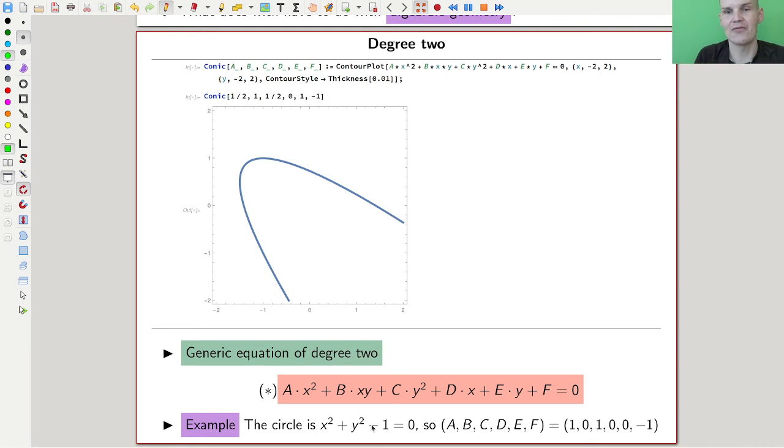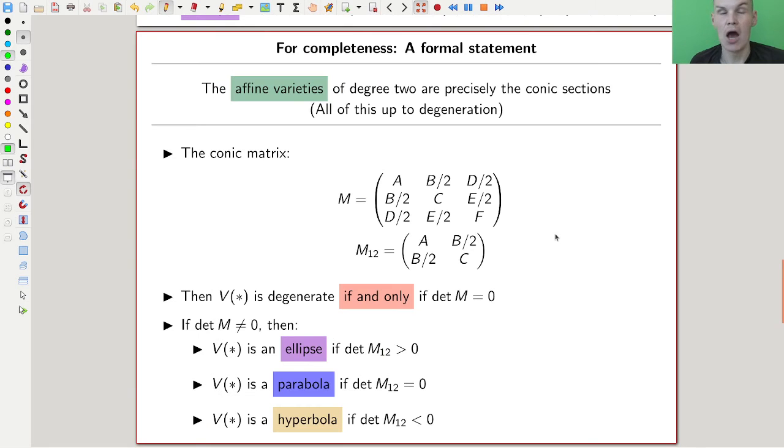This is our generic degree two equation, right? This is exactly degree two equation, and you just write down generic parameters. And all of our friends, you can just check that by just listing them. I'll show you a smarter way in a second. All of our friends, the conic sections are degree two equations or degree two polynomial equations. In more algebraic geometry terms, all affine varieties to zero sets of our polynomials of degree two are conic sections.